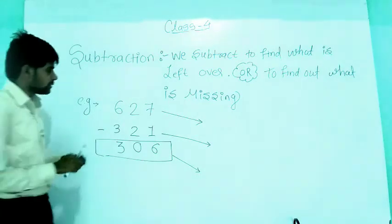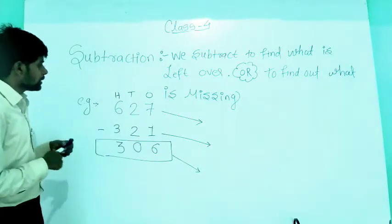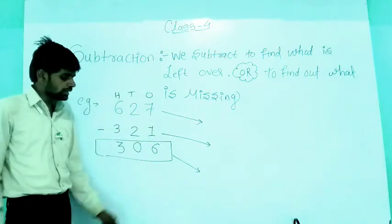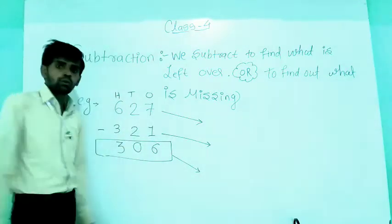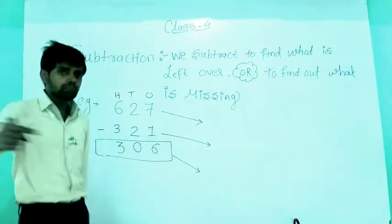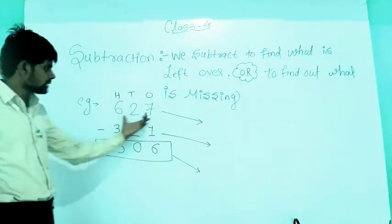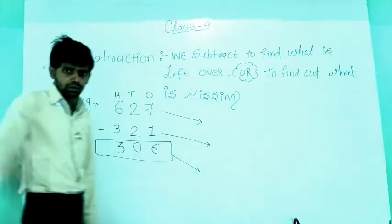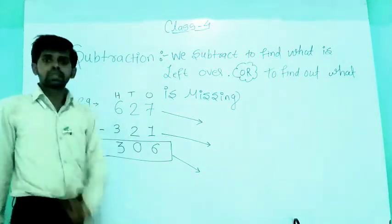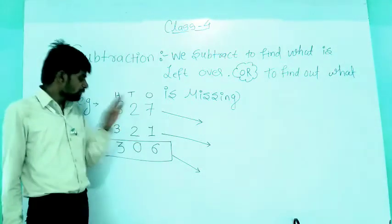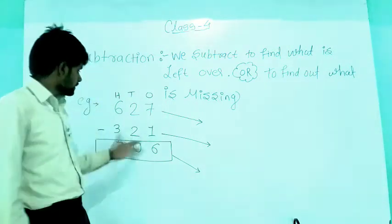Look at this example: the number is 627. This is the ones place, this is the tens place, and this is the hundreds place. The first number is 627 and we have to subtract 321 from it. 627 is the bigger number and 321 is the smaller number. We can subtract the smaller number from the bigger number, but not the bigger from the smaller.